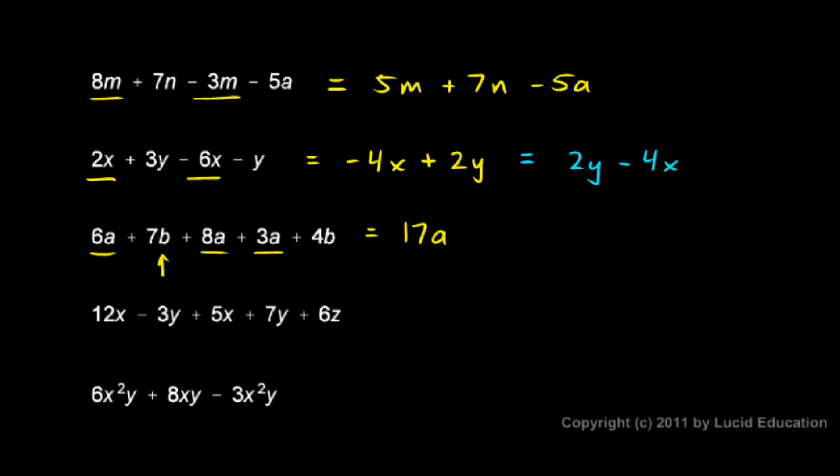Now I have the 7b and the 4b. Those combine to 11b. So my answer is 17a plus 11b. I've combined all the like terms. I've combined all the a terms and all the b terms.